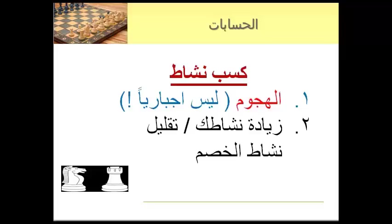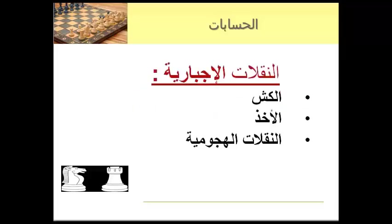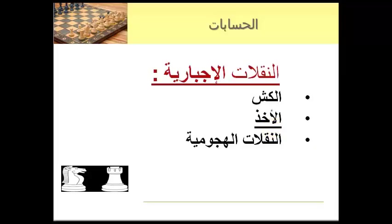But if you make an attacking move, you force your opponent to defend, so you only need to calculate one line. This explains why it is comfortable to calculate forced moves. But what are forced moves? Forced moves are checks, captures, and attacking moves. Checks are the most forcing — your opponent is forced to do something: defend the king, move it away, or something else.